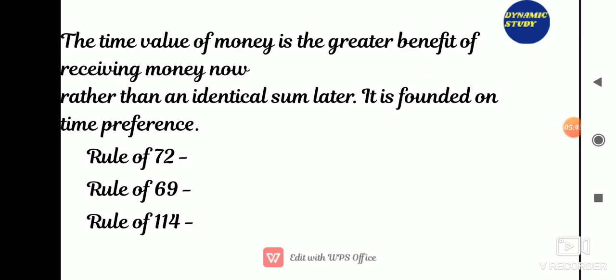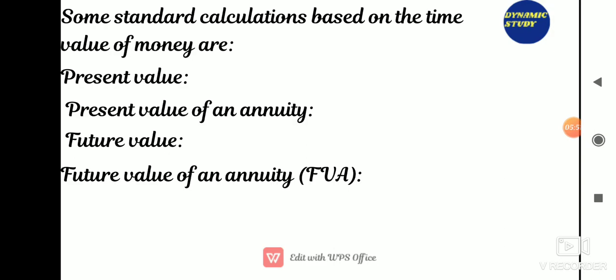The time value of money problem involves the net value of cash flows at different points in time. Some important calculations based on time value of money are: present value, present value of annuity, future value, and future value of annuity. Present value is the current worth of a future sum of money or stream of cash flows given a specified rate of return. Future cash flows are discounted at the discount rate — the higher the discount rate, the lower the present value of future cash flows. Determining the appropriate discount rate is key to valuing future cash flows properly, whether they be earnings or obligations.